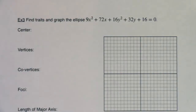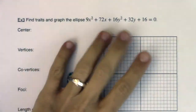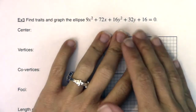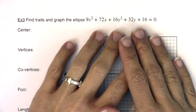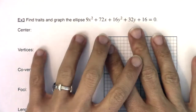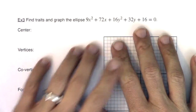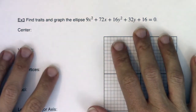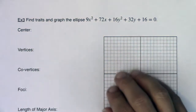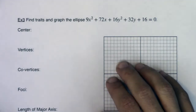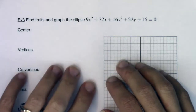Hey Math 31! We're going to do the same thing that we did in example two, but our equation is worse. Our equation is nowhere near standard form. Our center will no longer be at the origin, so it's going to make all of our traits just a little bit more complicated.